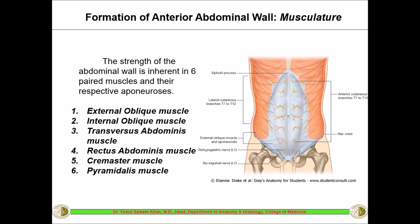The main muscles forming the anterior abdominal wall exist in pairs on either side. The first is the external oblique — externally present and obliquely placed. Deep to it is the internal oblique, and deepest is the transversus abdominis. Beside the midline on either side is the rectus abdominis. There are also two smaller muscles: the cremaster muscle, present only in males, and the small pyramid-shaped pyramidalis muscle.